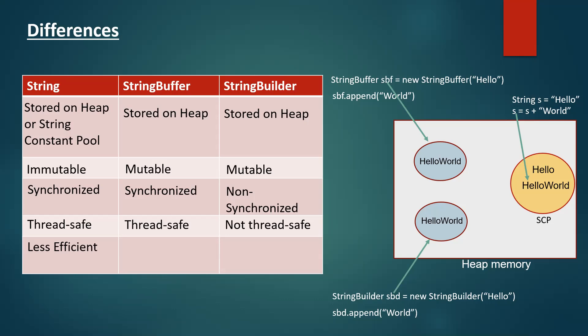Regarding performance: String is less efficient because whenever we modify a string, a new object gets created in the heap. StringBuffer is relatively faster and more efficient compared to String. However, because it is thread-safe, multiple threads accessing the objects means there is a lot of locking and unlocking that the code has to go through, so it is relatively slower than StringBuilder, but it is efficient when compared with String.